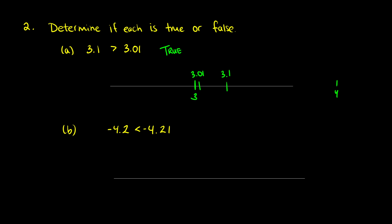Second: is negative 4.2 less than negative 4.21? Plotting negative 4, then negative 4.2 is 0.2 away from it. Negative 4.21 is 0.01 more negative than negative 4.2, so it sits just to the left of negative 4.2 on the number line. This statement is actually false — negative 4.21 is less than negative 4.2, not the other way around.